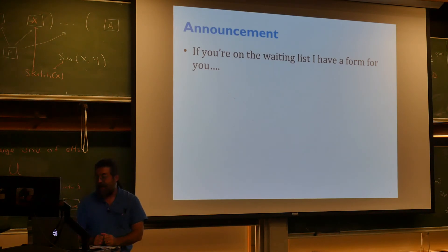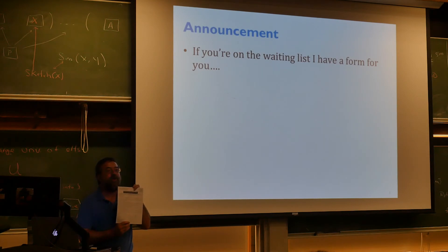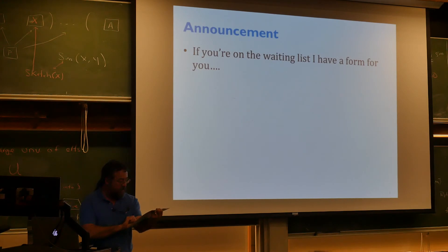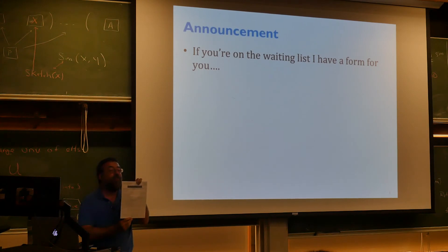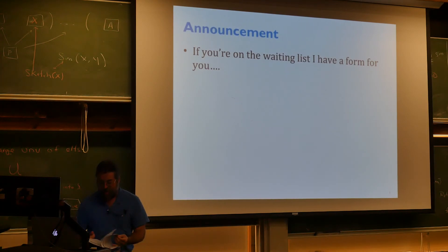The other announcement is mostly for people on the wait list. If you're on the wait list, you have to fill in a form which has to be signed by a whole bunch of people — your advisor, associate dean, department head, provost, university president, senator, Barack Obama. So there are a lot of things that have to get signed. You can get started with this piece of paper; I've already signed all these. Come on up either now or after class.